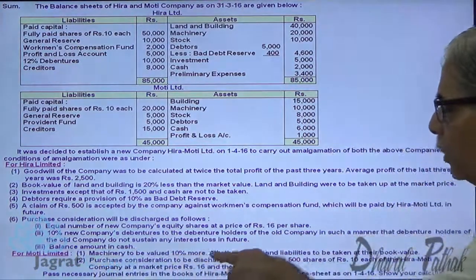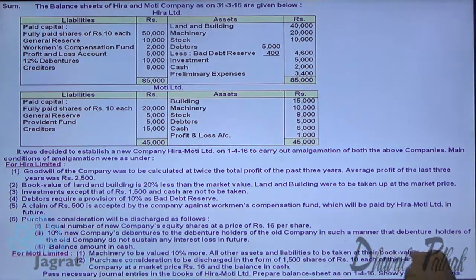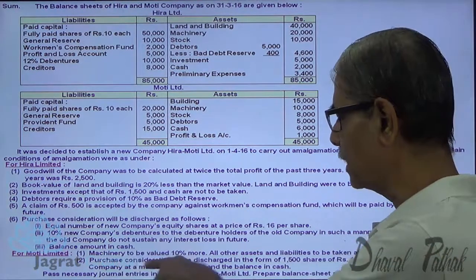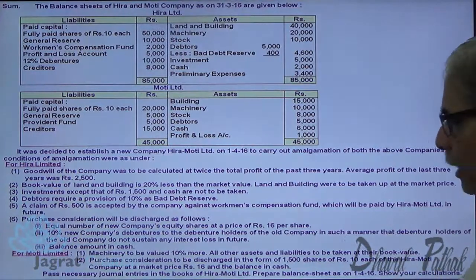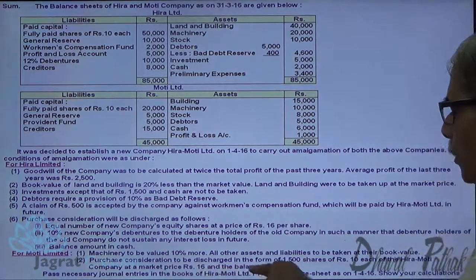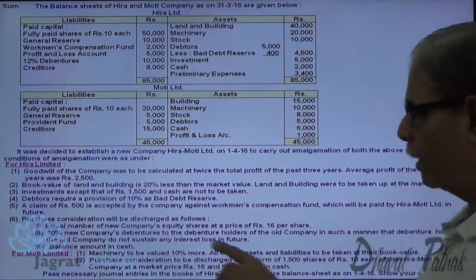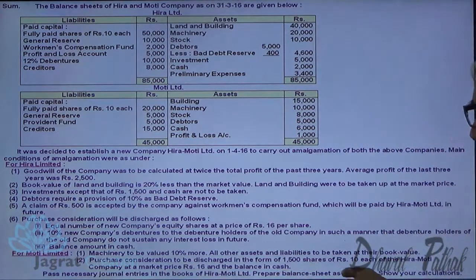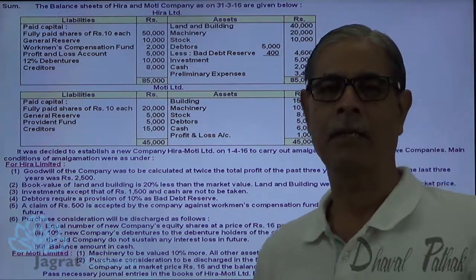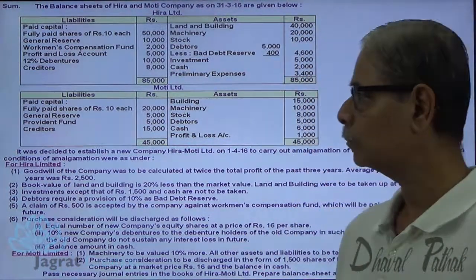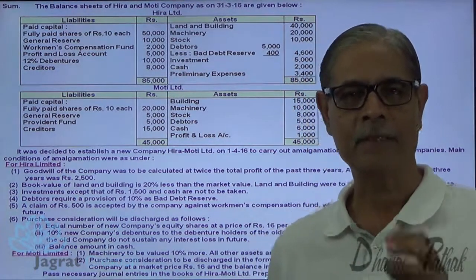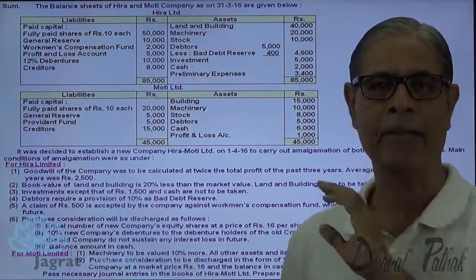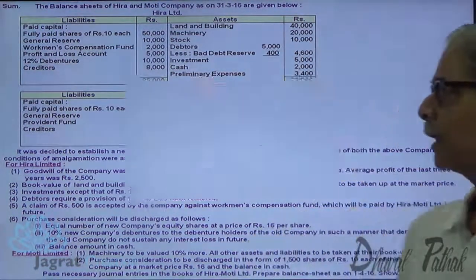For Muthi Ltd., machinery is to be valued 10% more, and all other assets and liabilities are to be taken at book value. Purchase consideration is discharged in the form of 1,500 shares of Rs. 10 each of Hira Muthi company at a market price of 16, with the balance in cash. Now let me prepare the working to determine net assets, and from that the cash to be paid to each company.